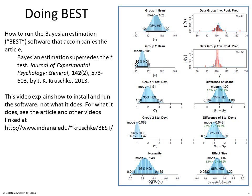This video is about BEST — how to run the Bayesian estimation software that accompanies the article 'Bayesian Estimation Supersedes the T-test' in the Journal of Experimental Psychology: General. This video explains how to install and run the software, not what it does. For what it does, see the article and other videos linked at the website shown here.